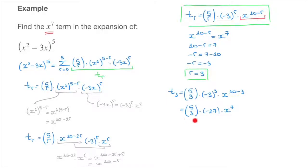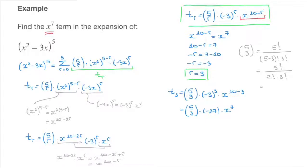All we have to do now is calculate the binomial coefficient 5, 3. That equals 5 factorial over (5 minus 3) factorial times 3 factorial, which equals 5 factorial over 2 factorial times 3 factorial. The 3 factorials cancel, leaving us with 5 times 4 over 2, which equals 10. So the binomial coefficient 5, 3 equals 10.